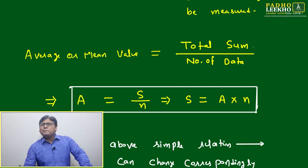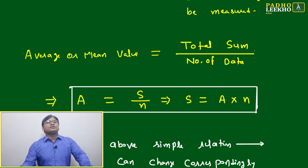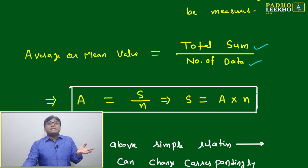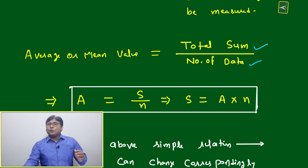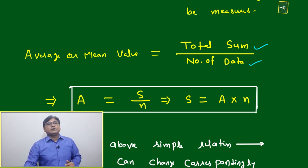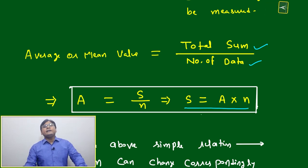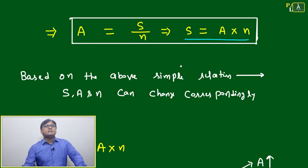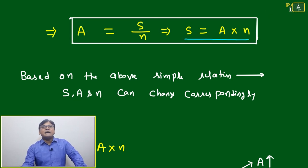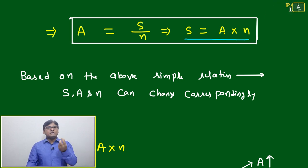The average or mean value is very simple — everyone knows it. The definition is total sum divided by number of data. The application, however, is not that simple. You can write it as S divided by n, or rearranged: S equals A into n. This means the total sum equals average multiplied by n. Multiply the average by n and you get the total sum — that is the central idea.